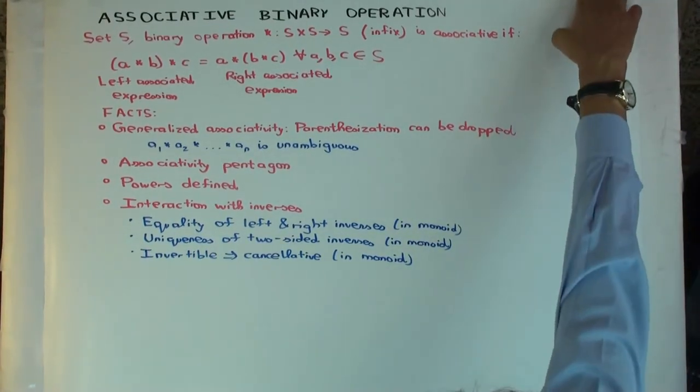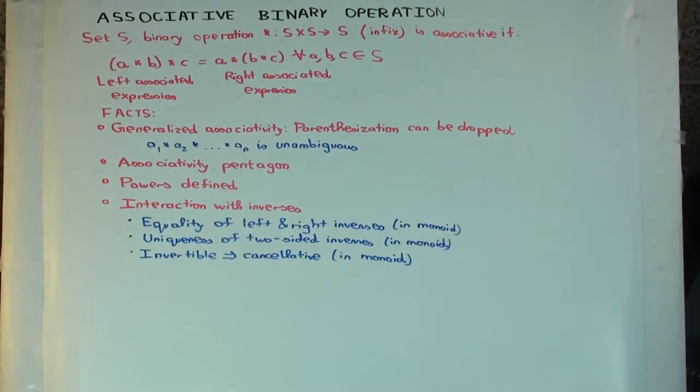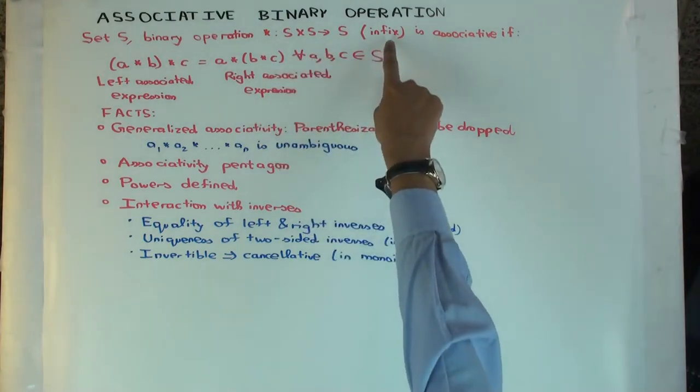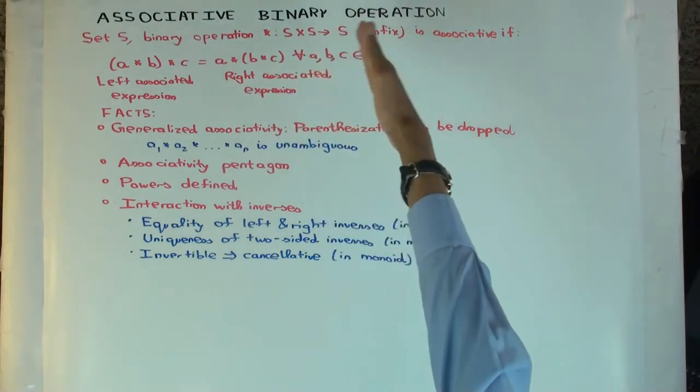In this talk I'm going to define associative binary operation, something you hopefully already know, but I want to talk a bit more about associativity and what it gives us. So you have a set S, a binary operation star, which takes two inputs and gives an output, and it's in infix notation, so the star of X and Y is denoted X star Y.